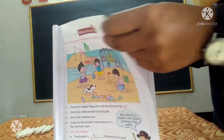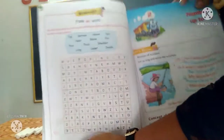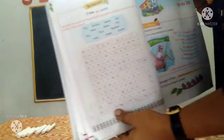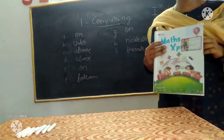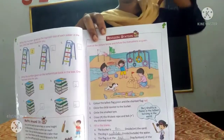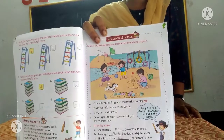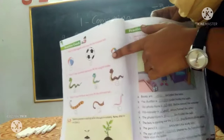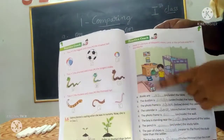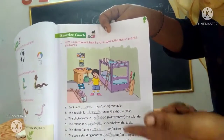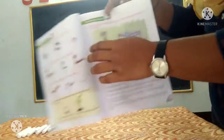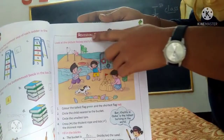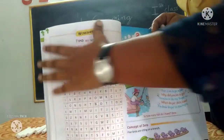Revision station and worksheet: in the next pages — page number 5 and 6 — we have a revision station and worksheet. Take your parents' or elders' help to fill in the revision station and worksheet. Try to do it.